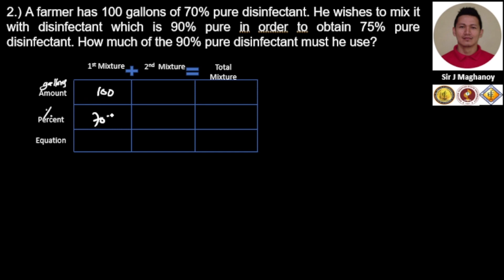How about the second mixture? He wishes to mix a disinfectant which is 90% pure in order to get 75%. So the second mixture amount in gallons is not defined for the 90% disinfectant. So we can assume or we let X be the amount in gallons of the 90% disinfectant.